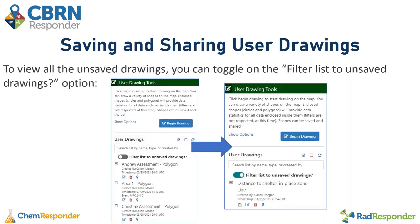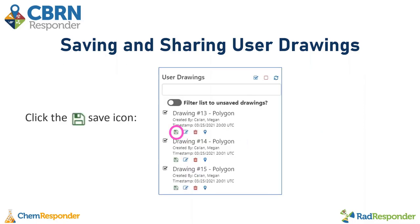There is also a filter for filtering the list to unsaved drawings only. If you toggle this on, you will see all drawings that have not been saved yet. This can be useful if you already have about 10 drawings on your map and just created another — turn that filter on and the one you just created will appear at the top.